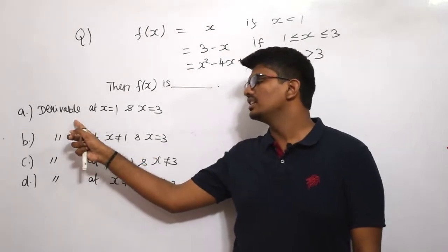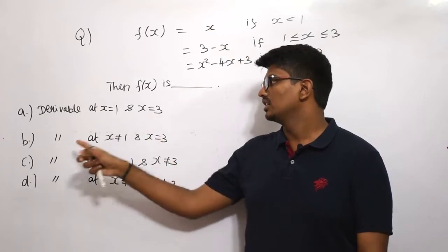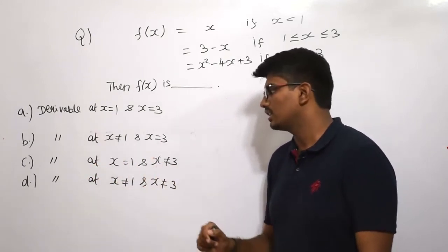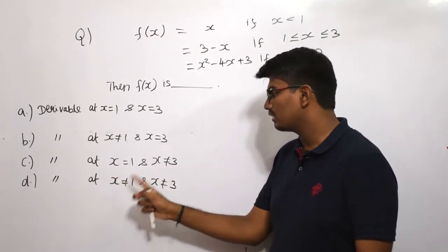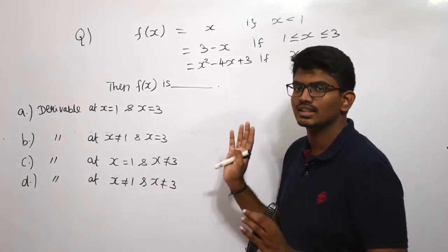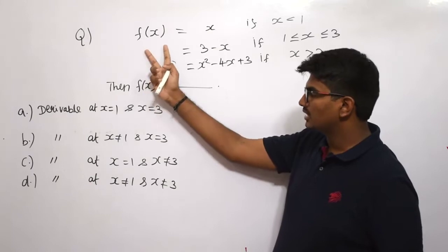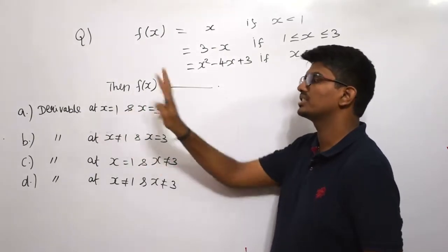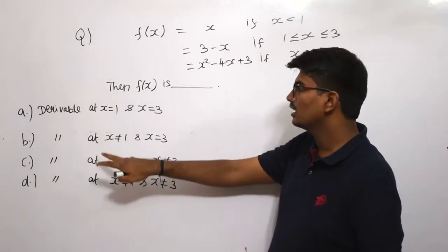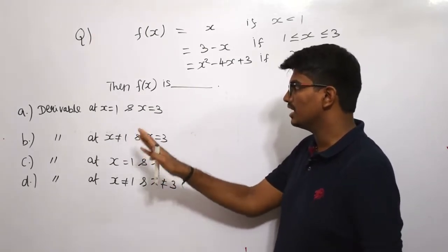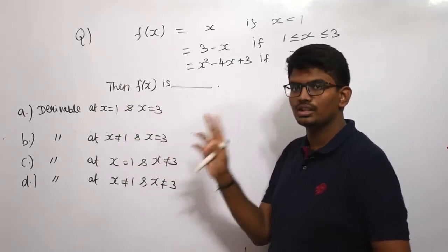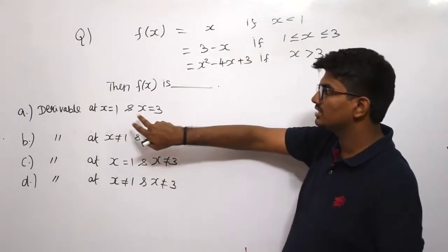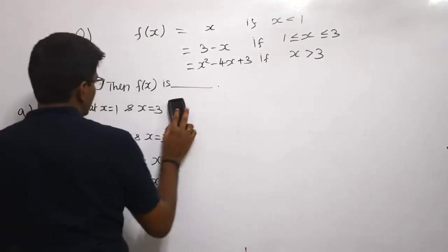They are given four options: derivable at x = 1 and x = 3; not derivable at x = 1 but derivable at x = 3; derivable at x = 1 but not at x = 3; not derivable at either x = 1 or x = 3. We need to find whether f(x) is derivable at x = 1 and at x = 3, then pick the matching option. So there are only two steps in this problem.